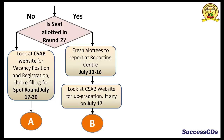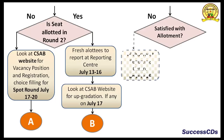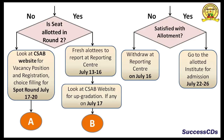Please note, display of vacancy position for spot round and extra spot round will also be done on the same day, i.e. 17th of July. The candidates who were allotted their seat in the second round should see whether they are satisfied with their seat or not. If no, withdraw at the reporting center by July 16th. And if yes, go to the allotted institute for admission between July 22nd to 26th.